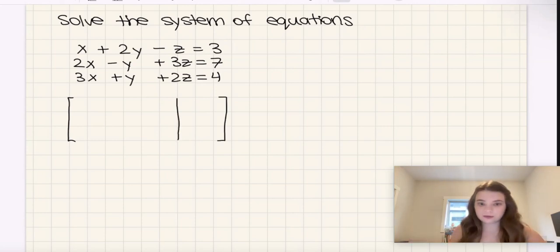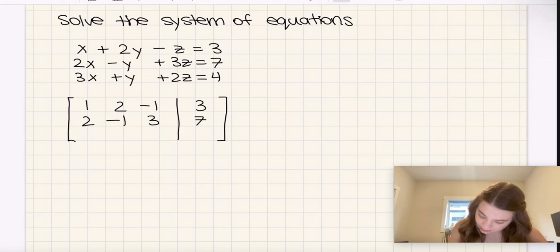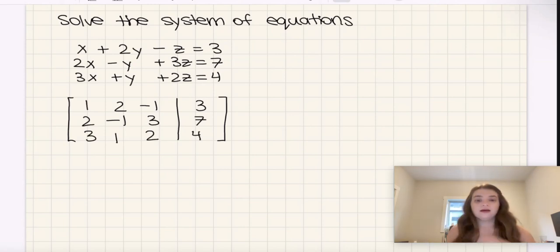So our coefficients for the first equation are 1, 2, negative 1, and then 3 is our constant. Then we have 2, negative 1, 3, and 7. Then we have 3, 1, 2, and 4.